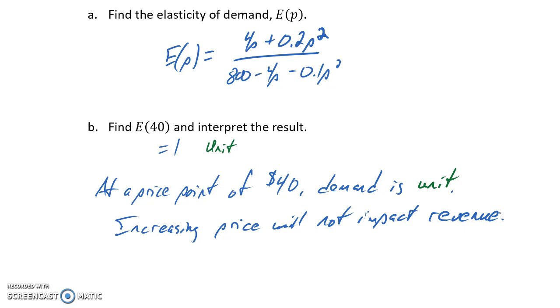We would bring in more money per item but sell fewer items, and those two values would cancel each other out. Increasing or decreasing price would have no impact on revenue.